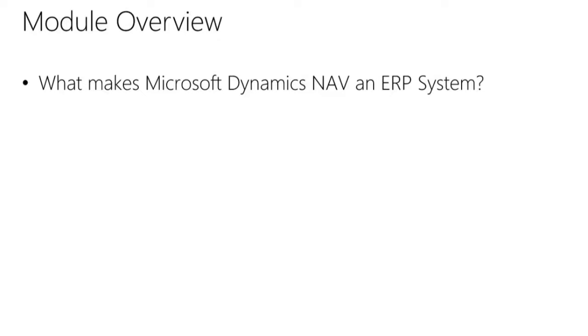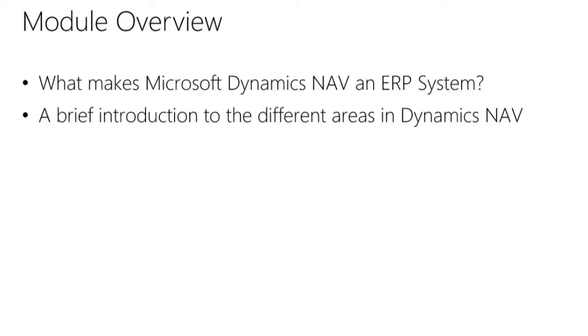Let's have a look at the overview of this module. I will start by explaining what makes Microsoft Dynamics NAV a typical ERP system, and then give you a brief introduction into the different areas available in Microsoft Dynamics NAV. The main objective of ERP is to integrate all departments and functions across a company into a single system by using a common database.